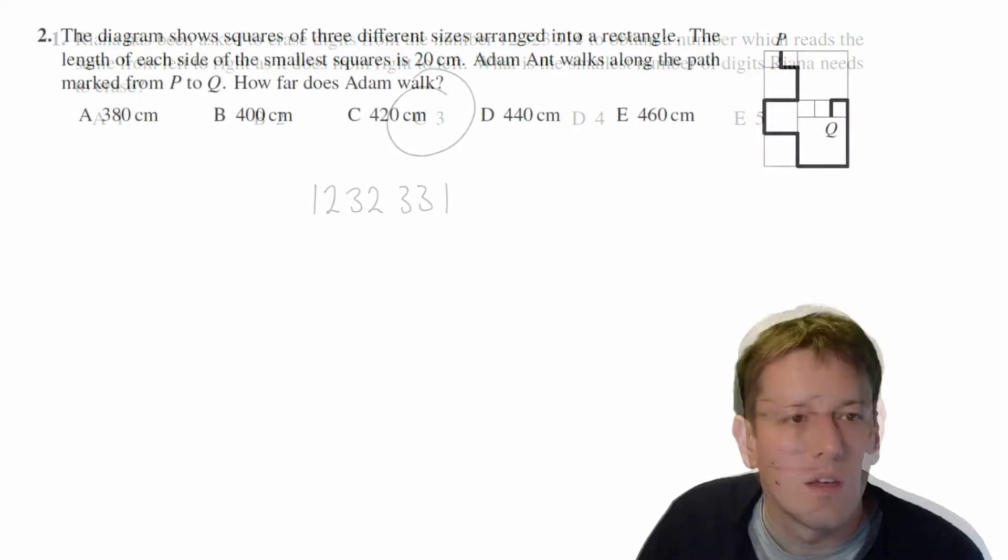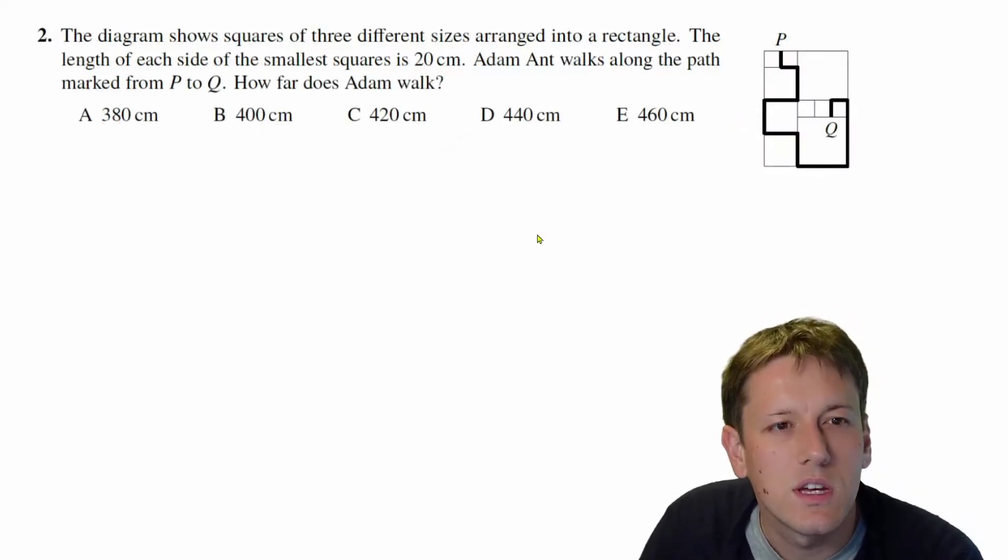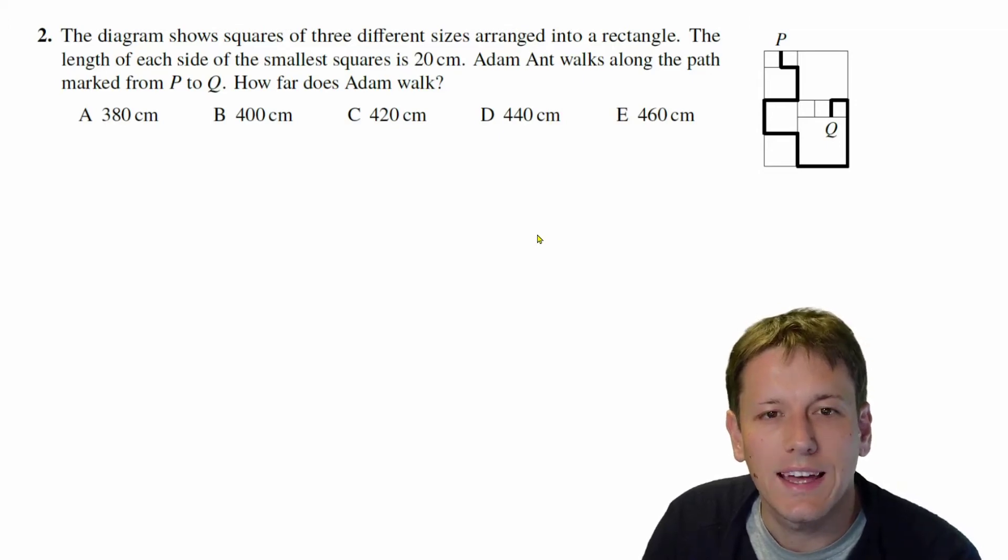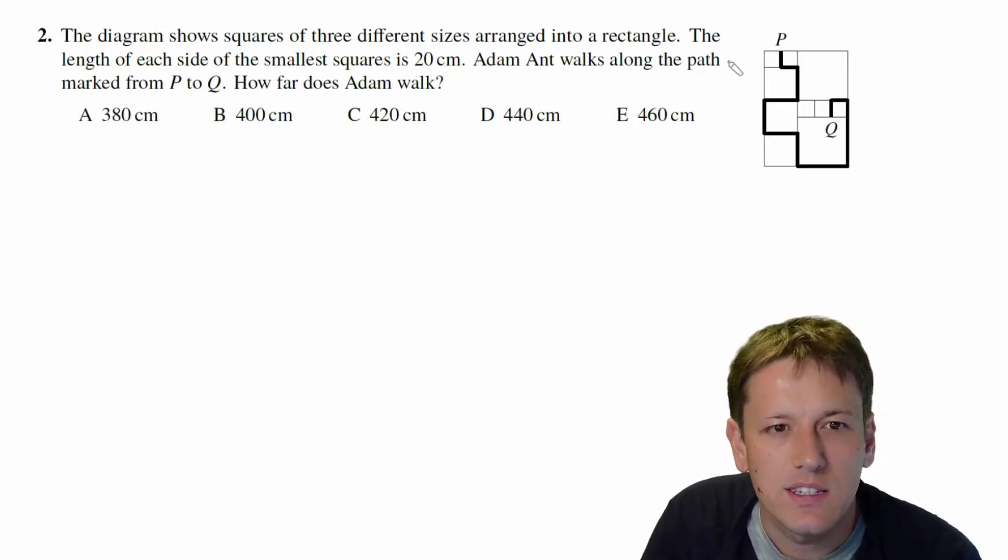In question two, the diagram shows squares of three different sizes arranged into a rectangle. The length of each side of the smallest squares is 20 centimeters. Adam Ant walks along the path marked from P to Q and we want to know how far does Adam walk.